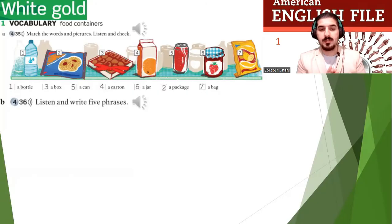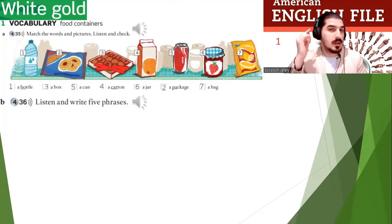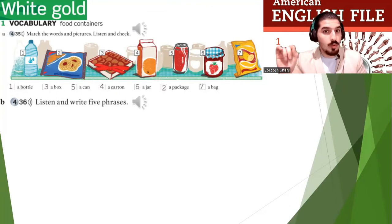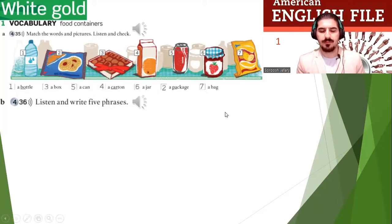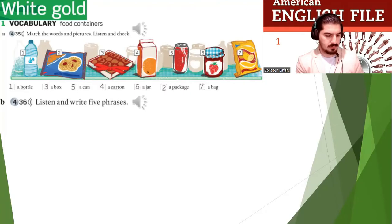In the next part, listen and write five phrases. Number 1: a bottle of oil. Number 2: a bag of oranges. Number 3: a can of peas. Number 4: a box of cereal. Number 5: a carton of milk.